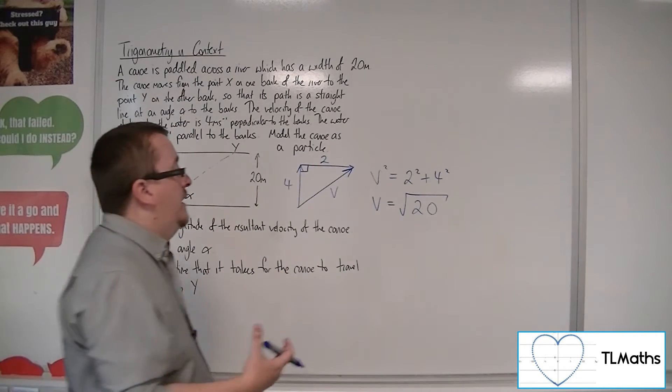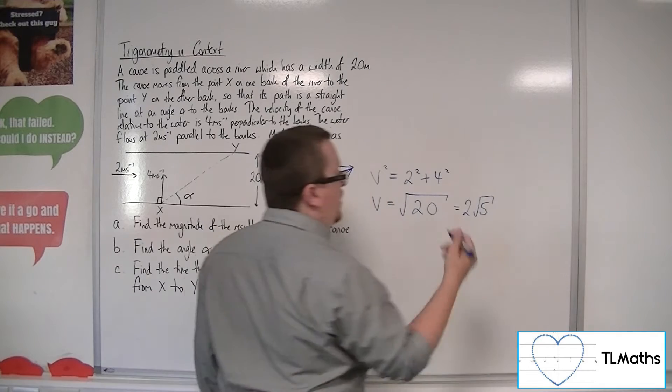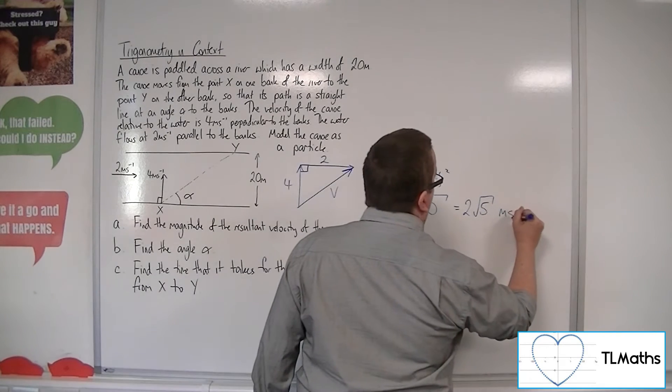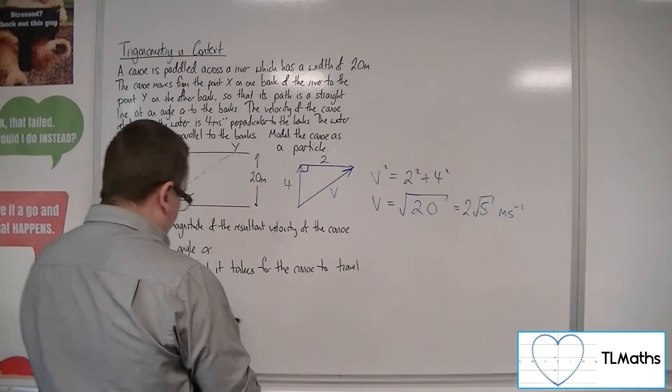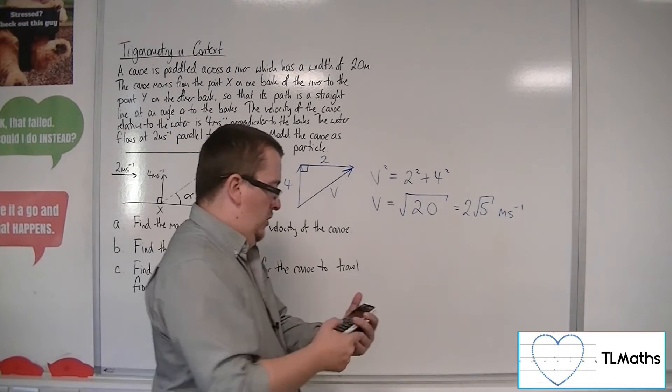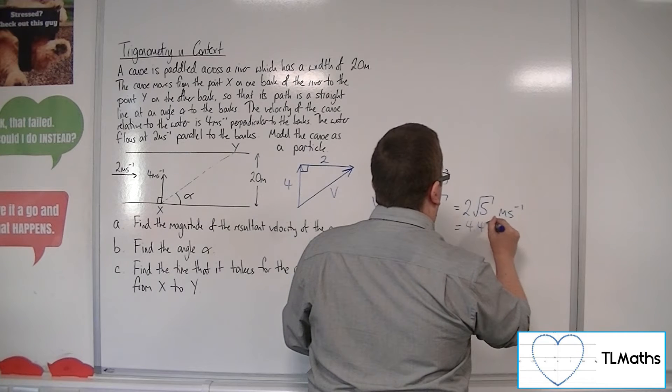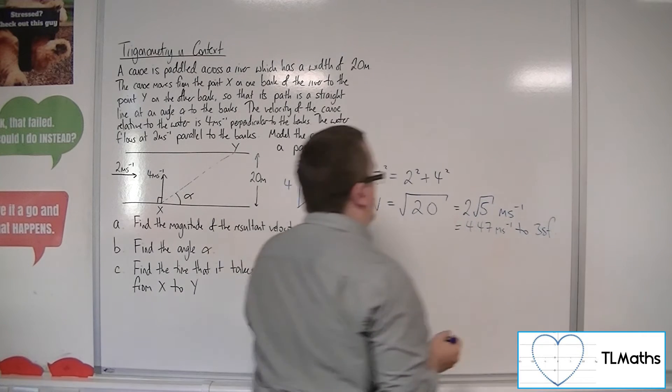Now, you could simplify that down to 2 root 5, or you could put it into decimal form to 3 significant figures if you like. That would be 2 meters per second. So 2 root 5 is 4.47 meters per second to 3 significant figures.